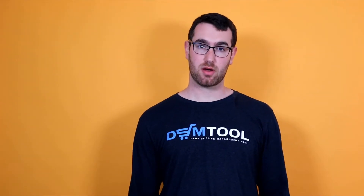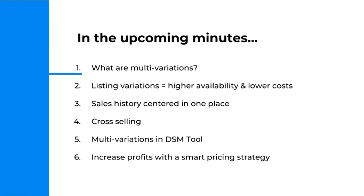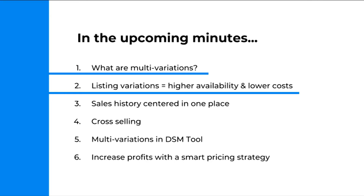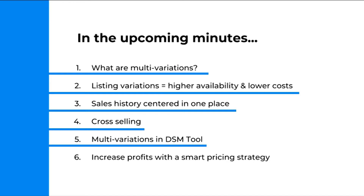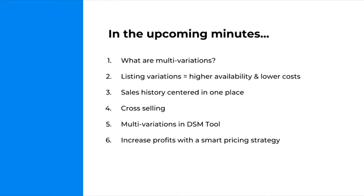In the upcoming minutes we're going to go over a couple of subjects. We're going to understand what multivariations are, how listing multivariations is going to help you save money and give you higher availability for your products. We're going to talk about sales history, what it is and how it gets centered in one place when you're listing multivariations. We're going to talk about cross-selling and how you can use it when listing multivariations. And I'm going to end with a tip about increasing your profits automatically with a pricing strategy, which is very relevant for this feature as well.